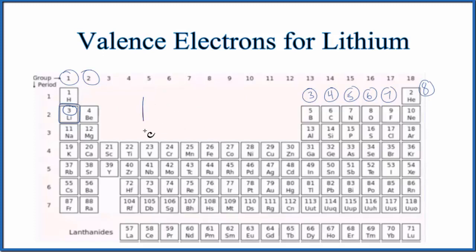If we write the configuration, we get 1s2. That energy level is full, so we go to 2s, and we add that last electron there. So the valence electrons here, they're in the highest energy level. Think of it as the outer shell. That's right here. That's the second energy level, and there's only one electron. So lithium has one valence electron, just like we found before.